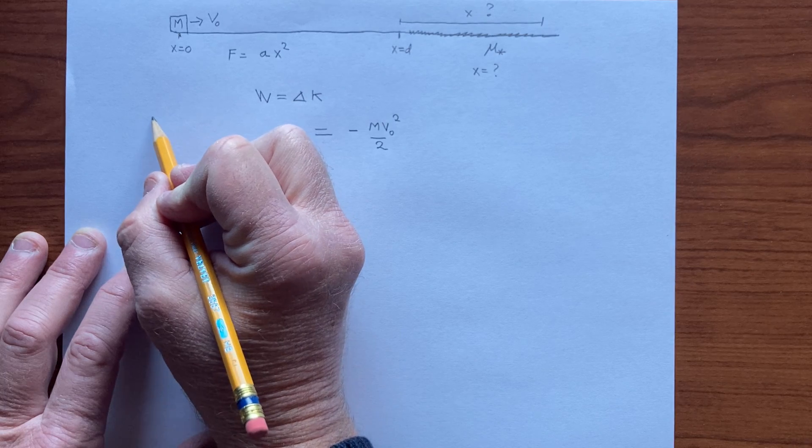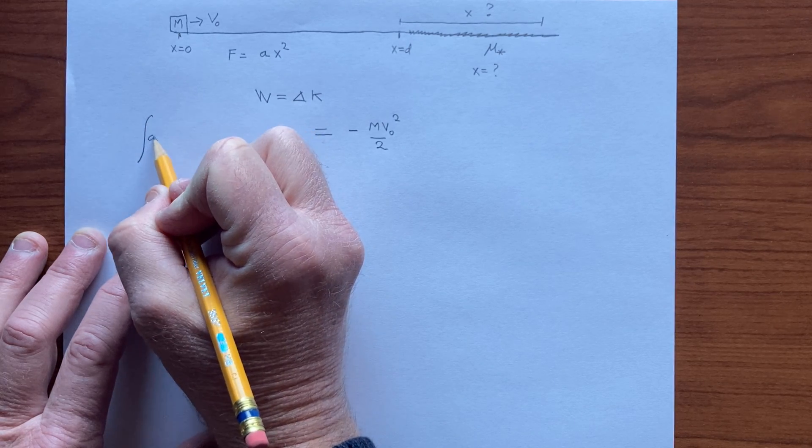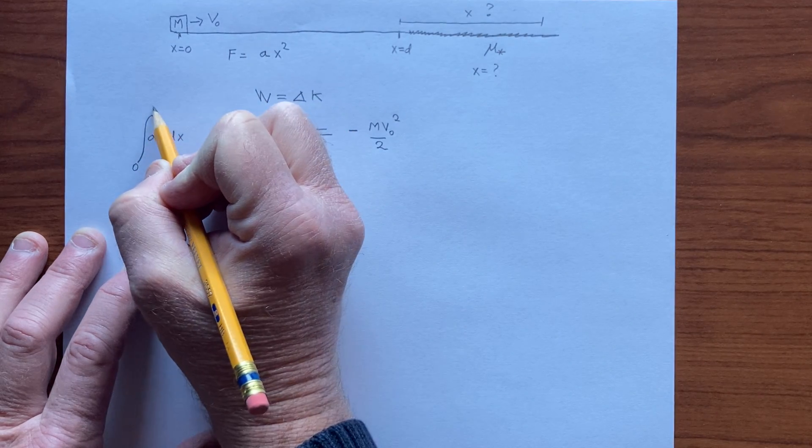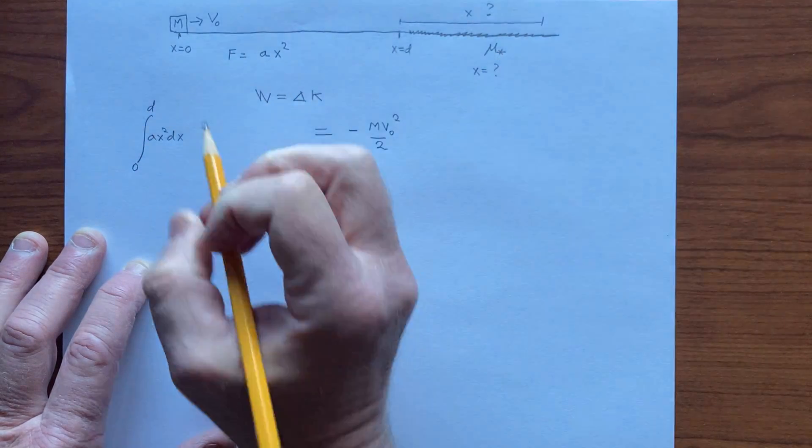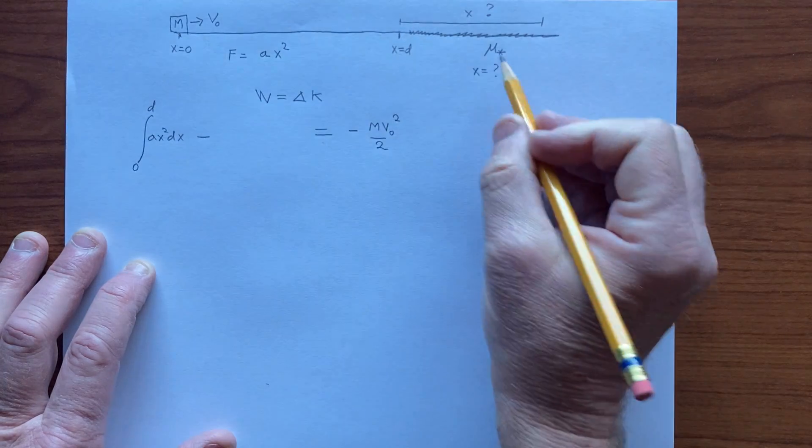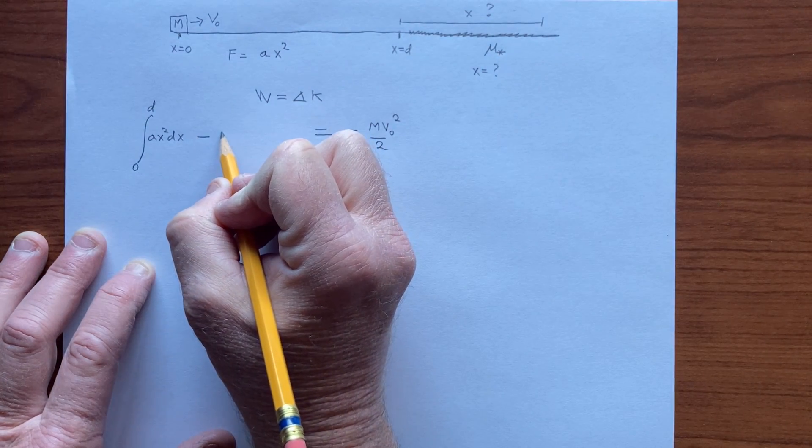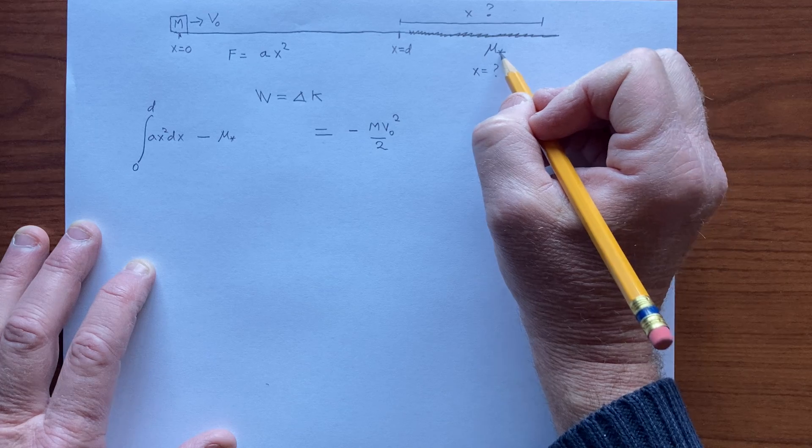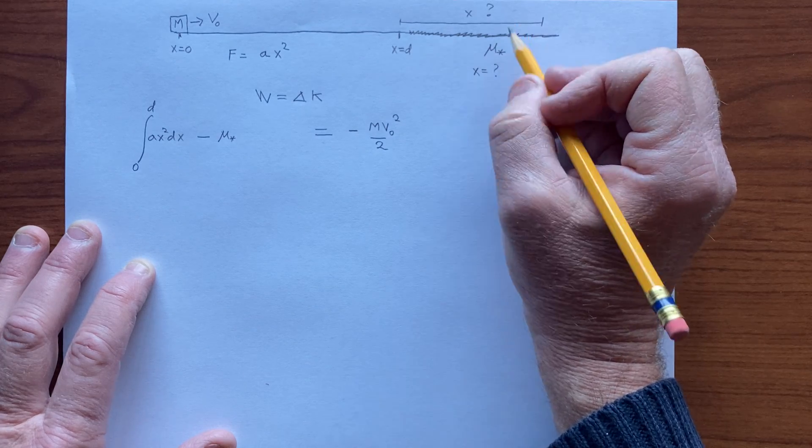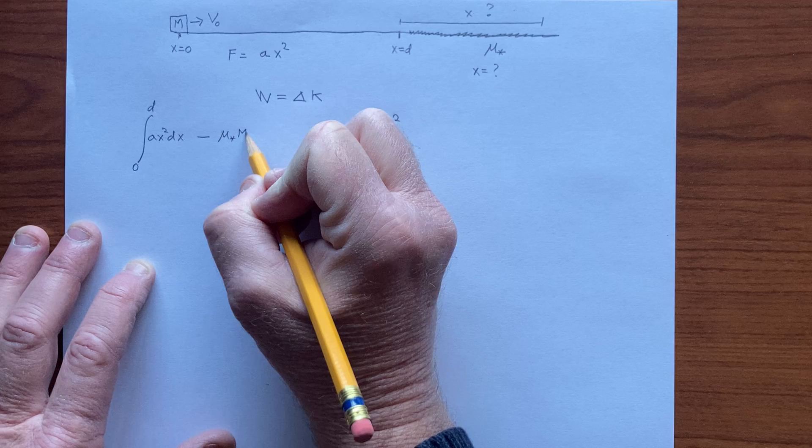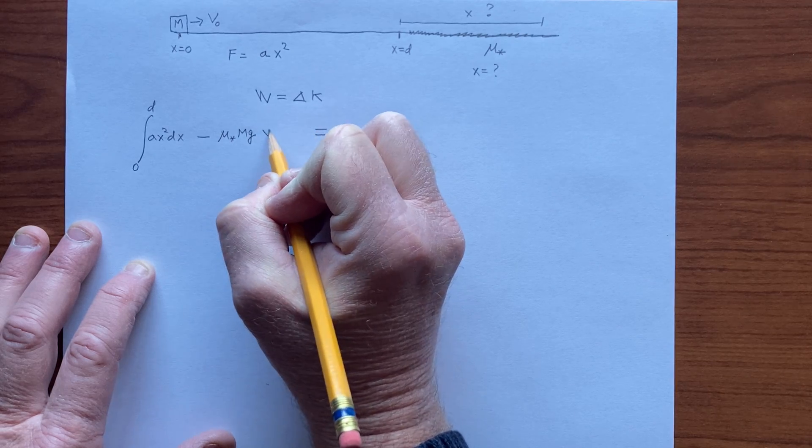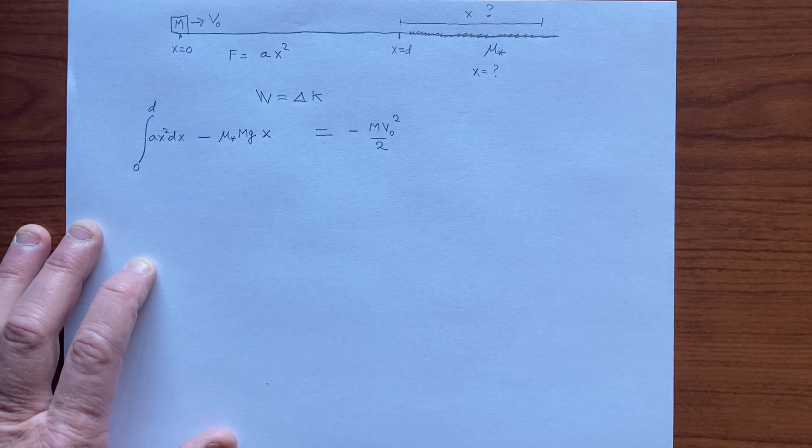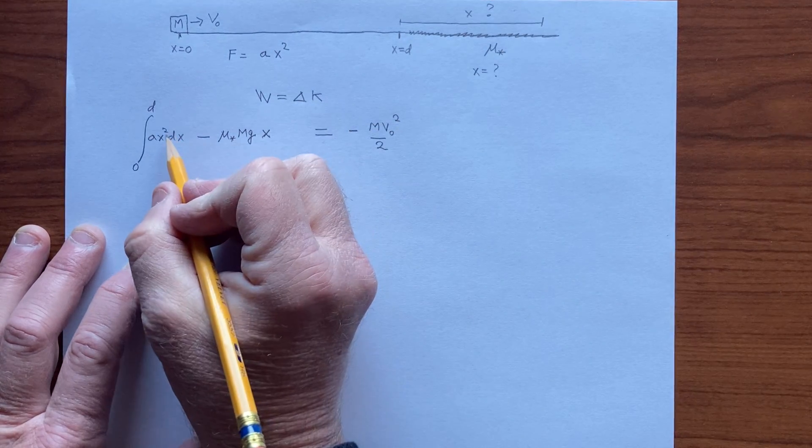It's given by the integral of a x squared dx from x equals 0 to x equals d. To that we add the work done along here, which is negative: minus mu star mg times x. The frictional force is mu star mg because the normal force is mg. This equals minus m v-naught squared over 2, and we have to evaluate this.